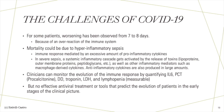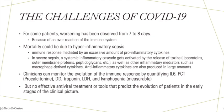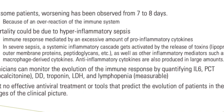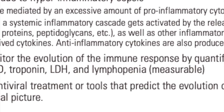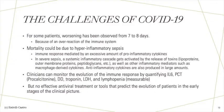Our cells are designed to operate in an inflammatory state — a state of emergency — only temporarily. Excessive cytokines damage our tissues as well. While treating an infection, clinicians can monitor the evolution of the immune response by quantifying substances such as IL-6, PCT, DD, troponin, LDH, and lymphopenia — that is, these are usually measurable.